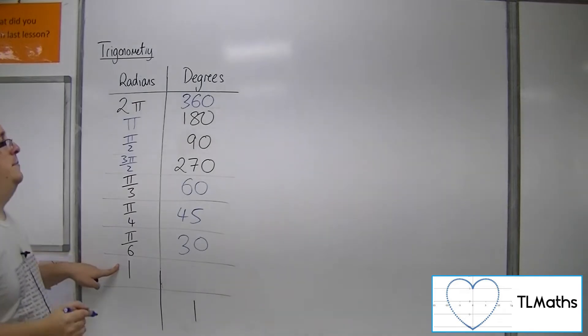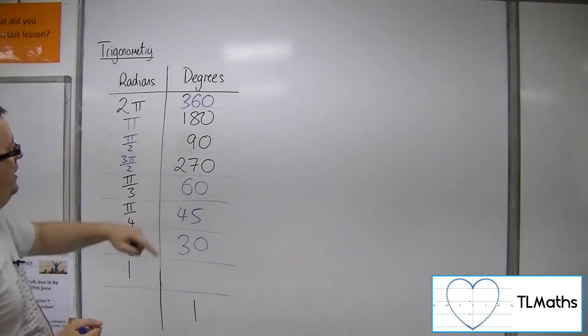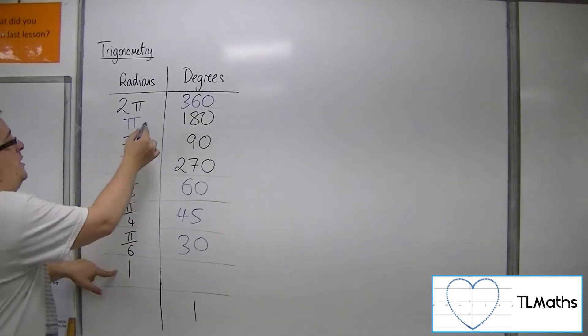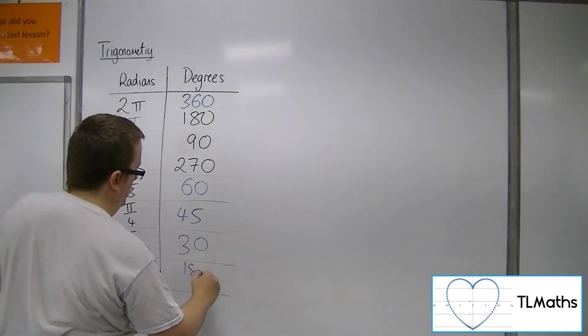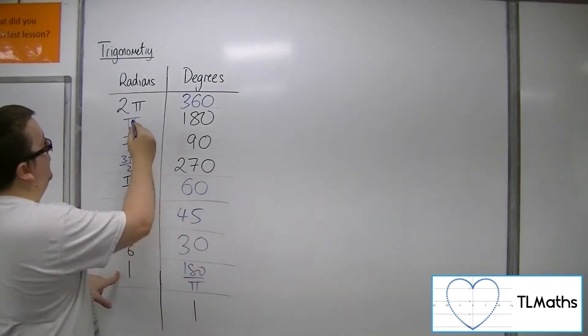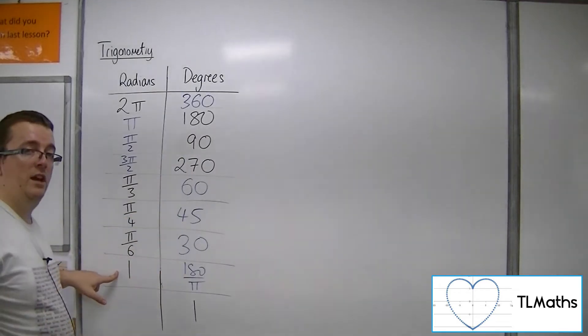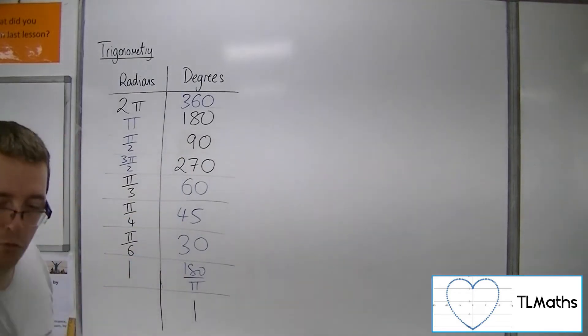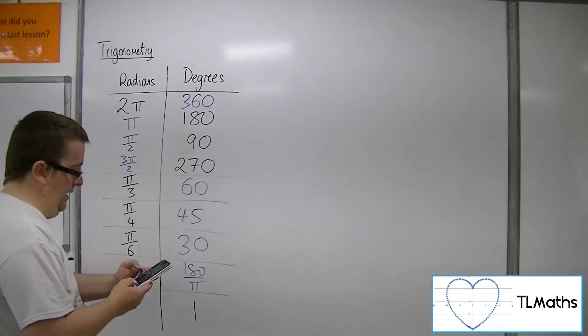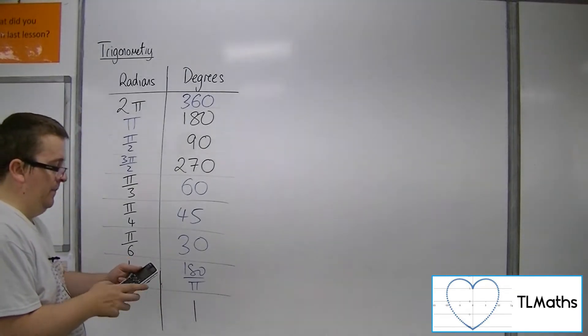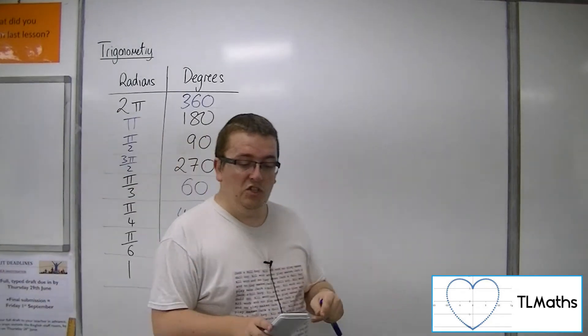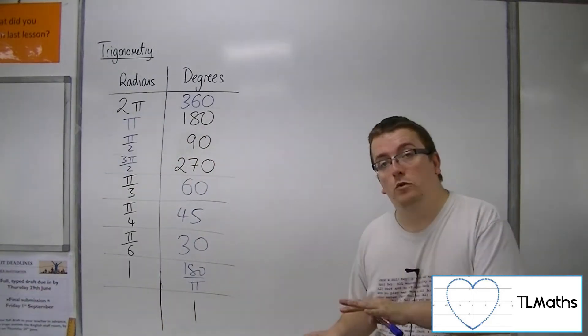Now what would 1 radian be? Well, if pi is 180, then you could divide both sides by pi. Divide pi by pi, you get 1. Divide 180 by pi, you get 180 over pi. So if you pop that into your calculator, 180 divided by pi, that's 57.29, so 57.3 degrees.